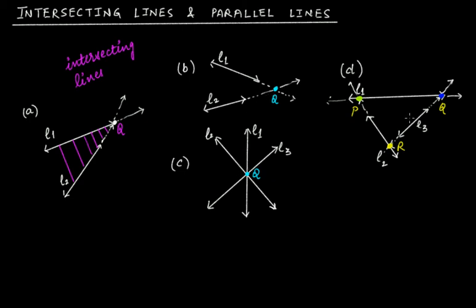They are intersecting lines because the distance between them becomes zero at the contact point — the point of intersection. So that was all about parallel lines and intersecting lines.